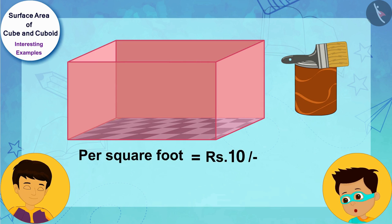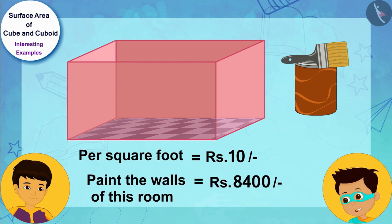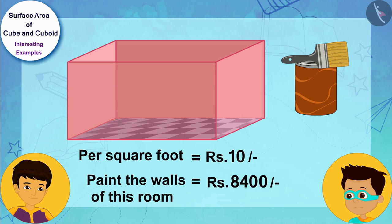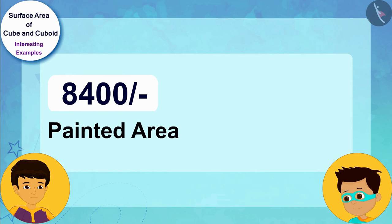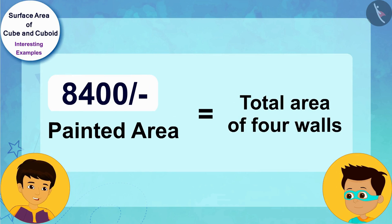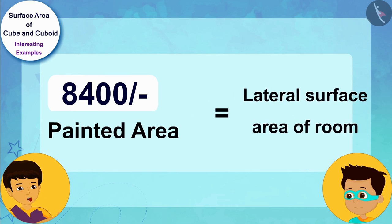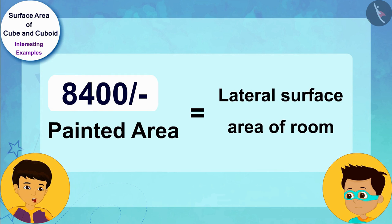The area you painted for 8400 rupees is equal to the total area of these four walls, or the lateral surface area of this room. To find the lateral surface area of a room, we only have to divide this cost at the rate per square foot that you paid for the color.